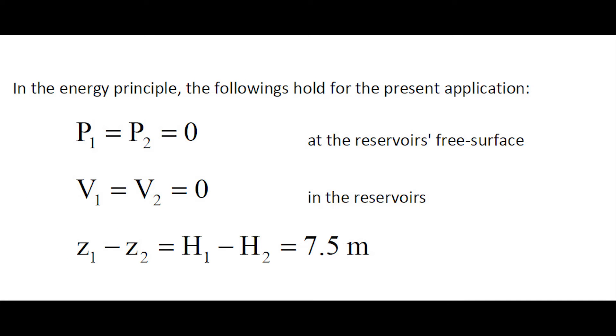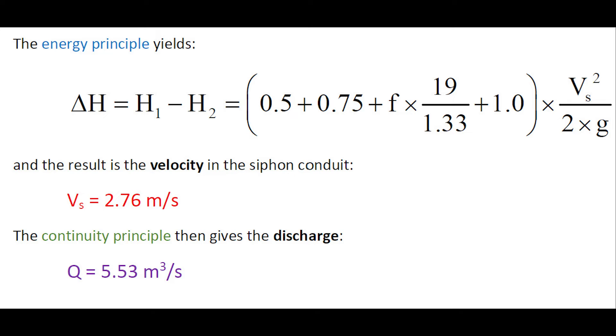In the energy principle, we can use the following assumptions: P1 equals P2 equals 0 at the reservoir surfaces, assuming that the atmospheric pressure is 0, and V1 equals V2 in both reservoirs. The energy principle gives an expression of the height difference, and this leads to the velocity in the siphon conduit of 2.76 meters per second.